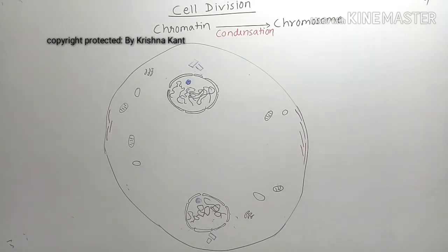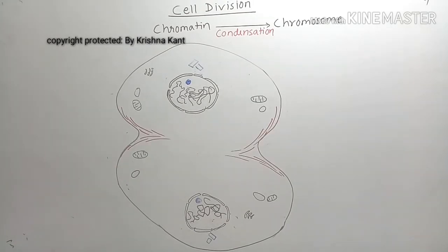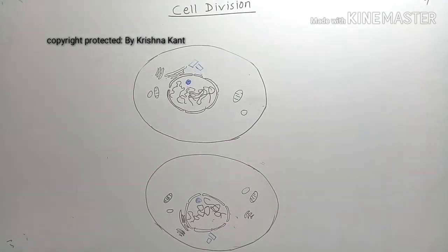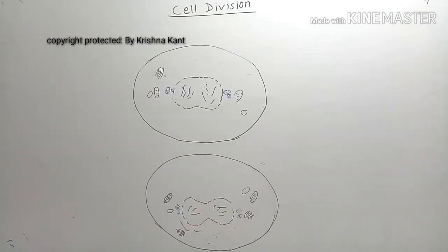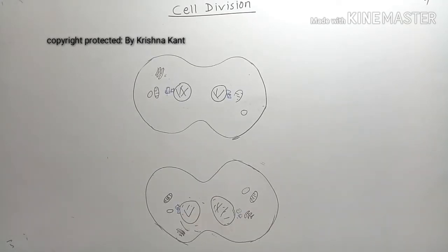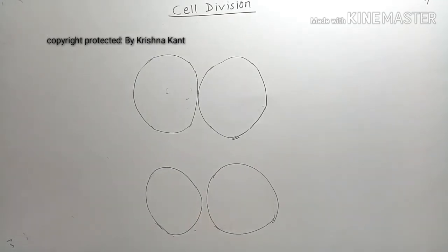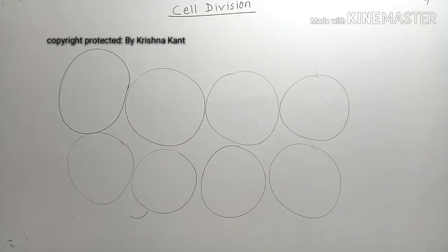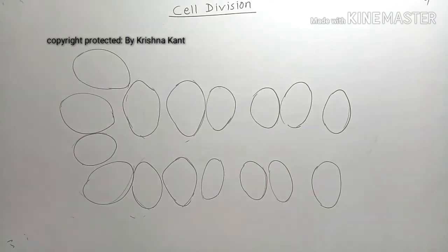The nuclear membrane, nucleolus, and most organelles reappear, and finally cytokinesis takes place, resulting in two identical daughter cells. These daughter cells undergo the next round of cell division, producing four daughter cells, then eight in the following round, and so on.